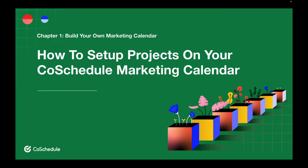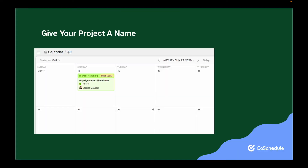Now that you've created a project on your calendar, let's finish setting it up. First, you'll want to give your project a name. This shows up on your project card when you're in the calendar view. In this example, the name of the email marketing campaign is May Gymnastics Newsletter.